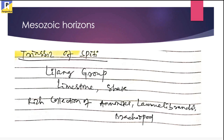Next are the Mesozoic horizons. The first Mesozoic fossil-bearing horizon is the Triassic of Spiti. Spiti is located in Himachal Pradesh and the Triassic rocks of Spiti hold rich assemblages of fossils. The type area is known as the Lilang Valley, so these rocks are also known as the Lilang Group. The chief lithotypes are limestone and shale. Rich collections of ammonites, lamellibranchs, and brachiopods are found in the Lilang Group.